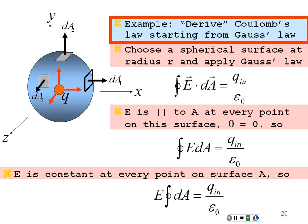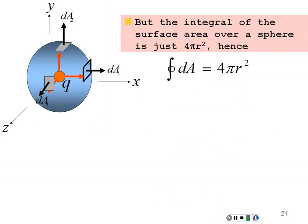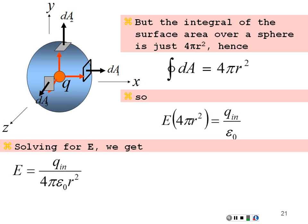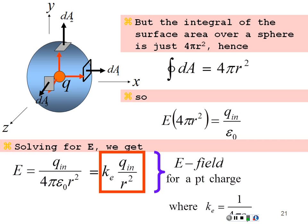Pulling the constant E field out of the integral, we have E times the integral of dA over the sphere equals the charge enclosed over epsilon naught. The integral of dA over a sphere is just the area of a sphere, which is 4 pi r squared. So the equation becomes E times 4 pi r squared equals Q enclosed over epsilon naught. Solving for the E field: E equals Q enclosed over 4 pi epsilon naught r squared, which equals kQ enclosed over r squared, where k equals 1 over 4 pi epsilon naught — our famous constant 9 times 10 to the 9. This is the E field for a point charge.